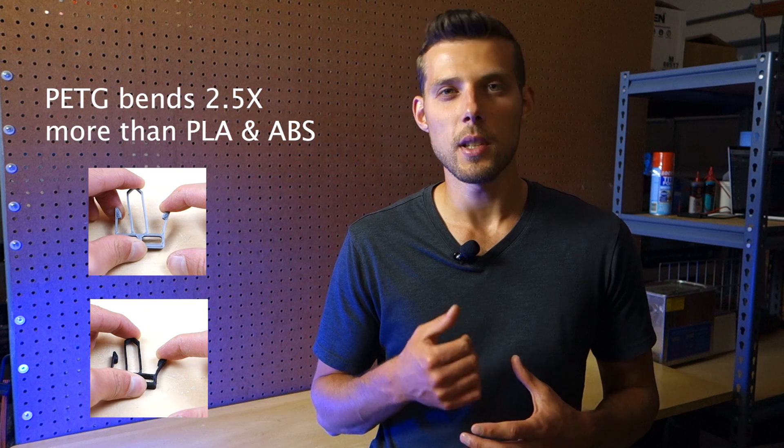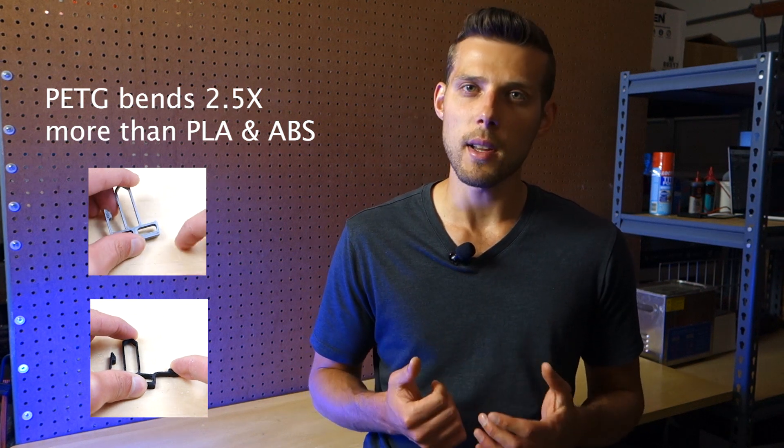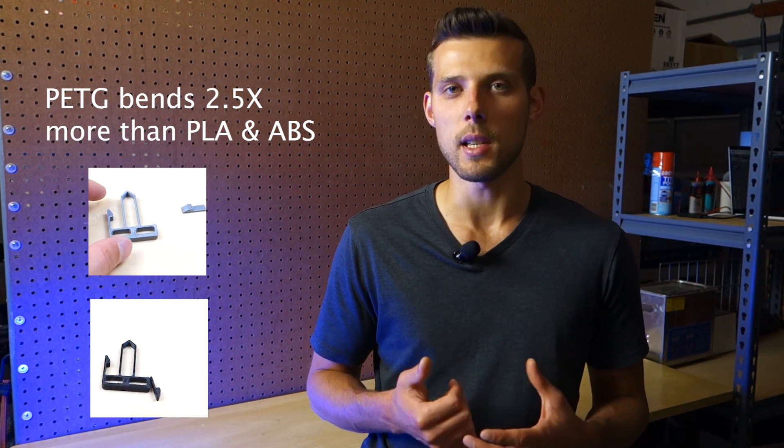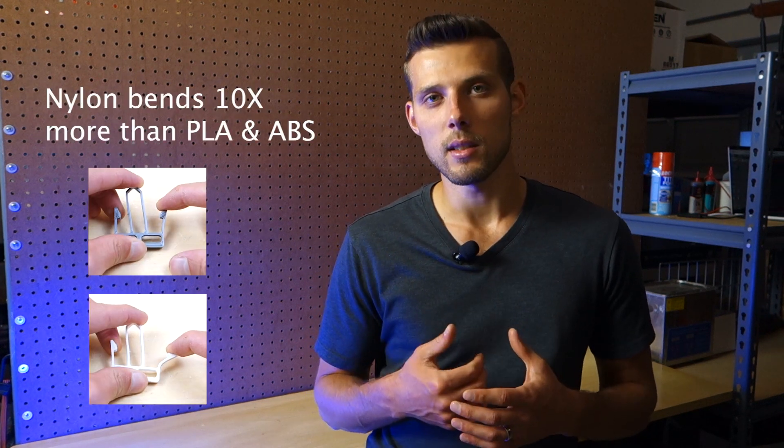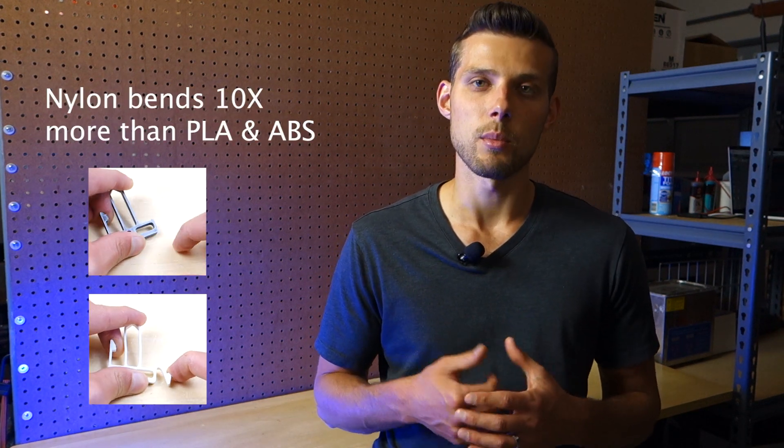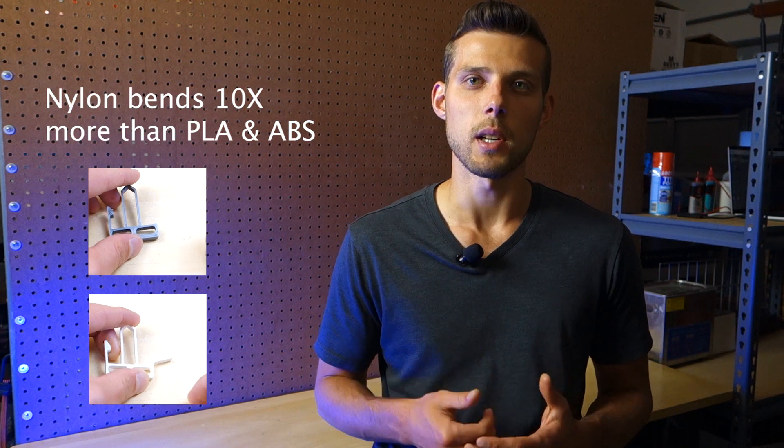This means that a PETG snap hook can bend two and a half times more than PLA and ABS before breaking. Similarly, a nylon snap hook can bend ten times more than PLA or ABS before breaking.